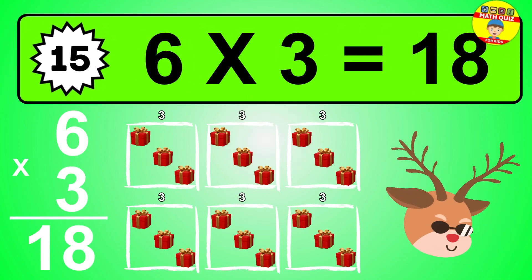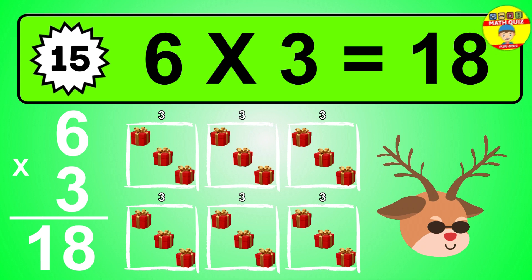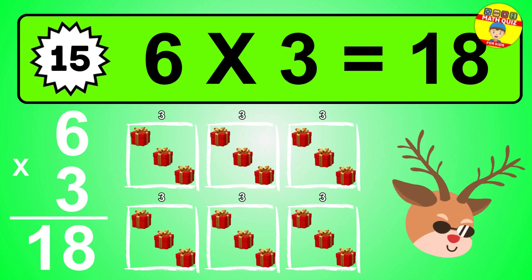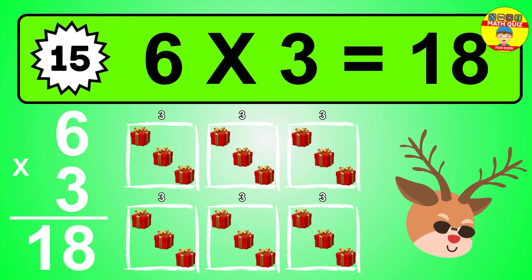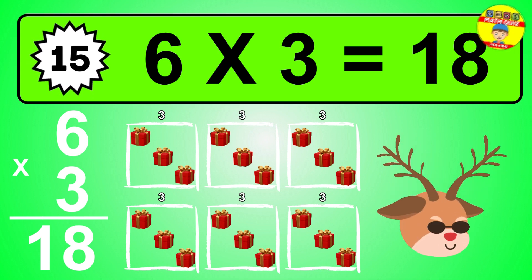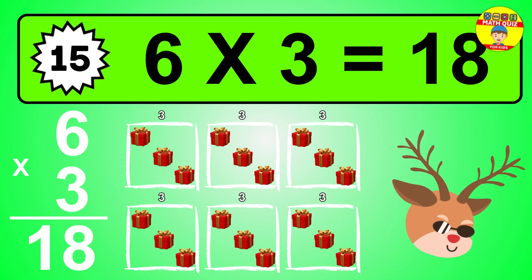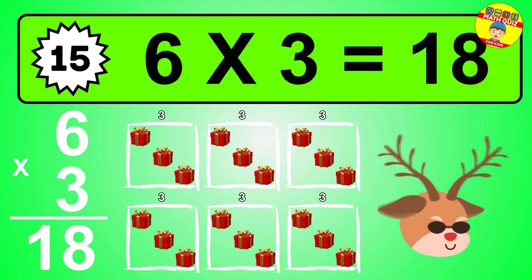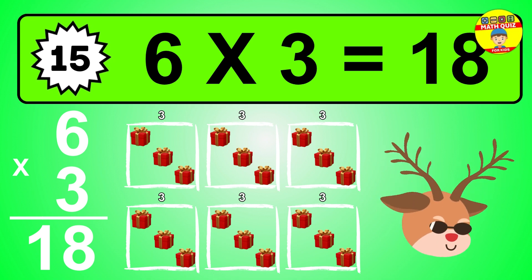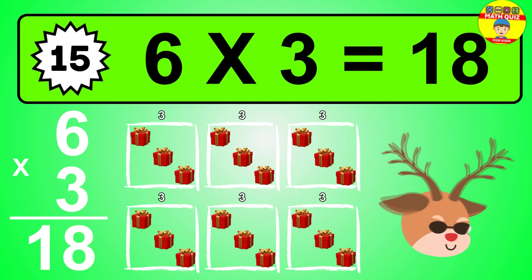The answer is six times three is eighteen. To calculate, we have six groups with three balls each one. So how many balls do we have? Eighteen balls.